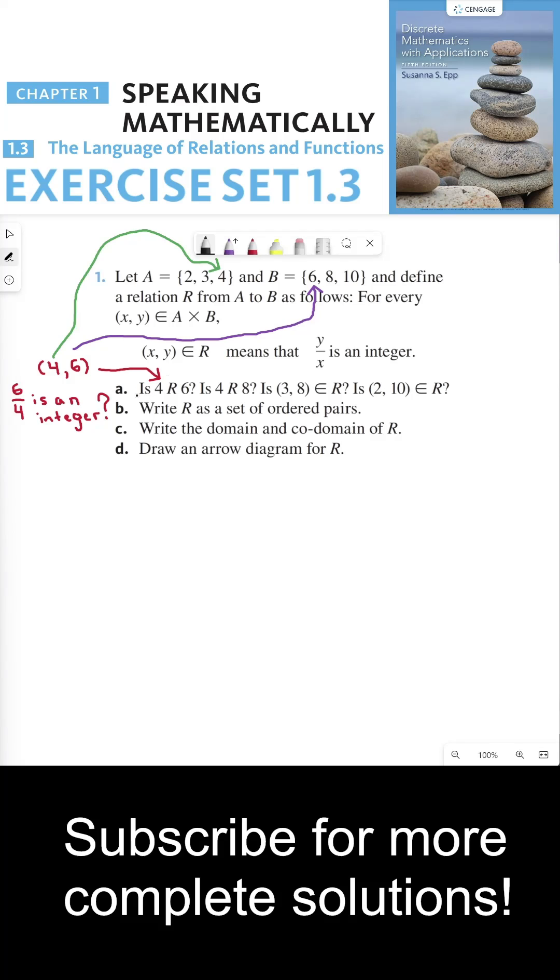So part A asks, is 4 related to 6? Now we can say this is asking, is this ordered pair in my relation R? Is this an element of R? Now we know when an ordered pair is an element of R according to the definition of this relation. That means that my second element in the ordered pair divided by the first element in the ordered pair is an integer.